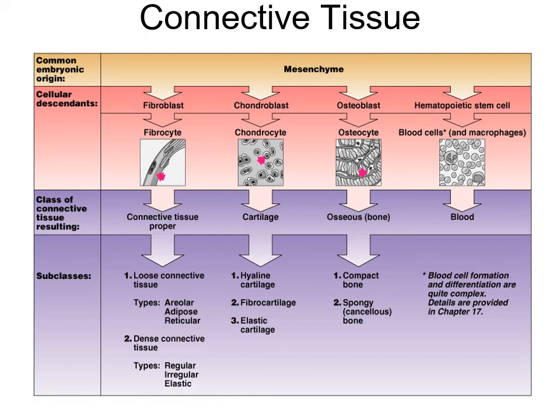Cartilage: chondroblasts become chondrocytes - the mature cartilage cell. There are three types of cartilage: hyaline, fibrocartilage, and elastic cartilage. The differences have to do with fibers, arrangement, and cell density. Osteoblasts become osteocytes - the immature and mature bone cells. The osteocyte is the parenchymal cell of bone, found in both compact and spongy bone.